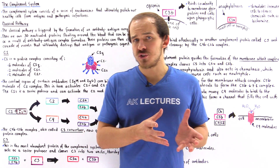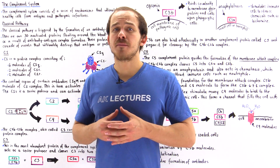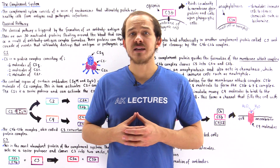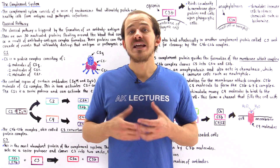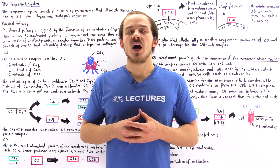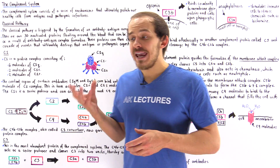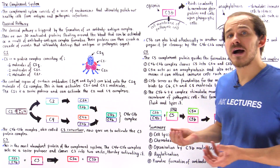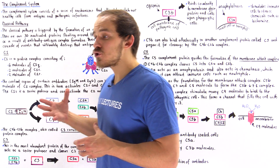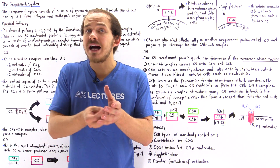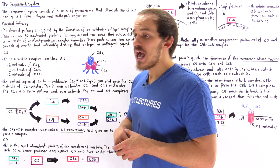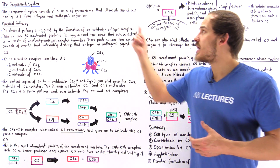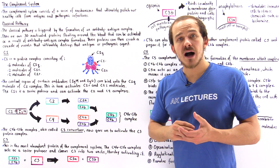Antigens are those pathogenic molecules, usually pathogenic proteins, that come from foreign pathogenic cells and which eventually end up in the bloodstream or the tissues of our body. While antibodies are those protein molecules that are produced by the immune cells of our body, which are complementary and bind to those antigens. Once the antibody binds onto the antigen, it forms the antibody-antigen complex.